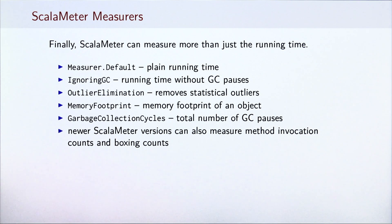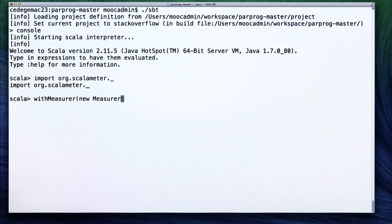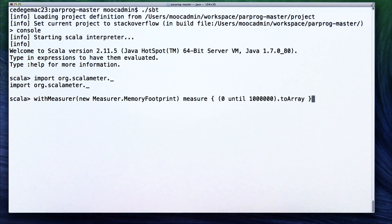Let's see an example of using a different measurer. Instead of measuring the running time, we will measure the memory footprint. MemoryFootprint will measure the total amount of memory occupied by the object returned from the snippet, which is in this case an array with a million integers.